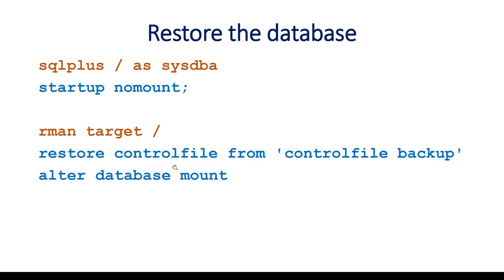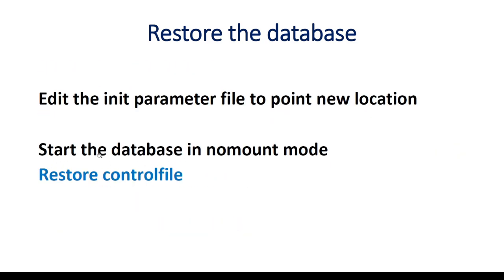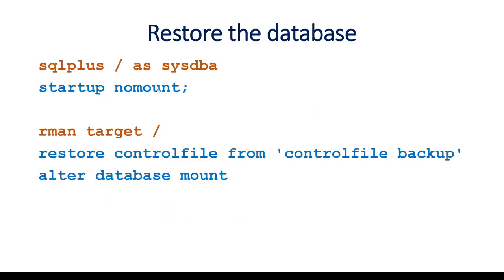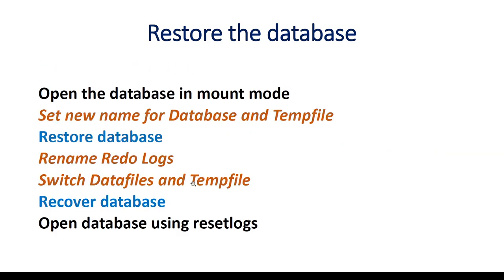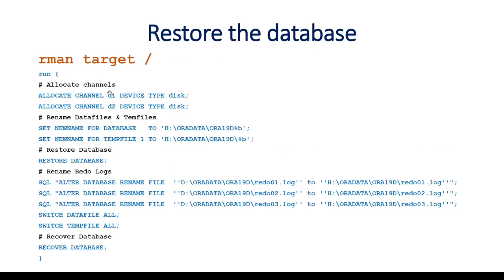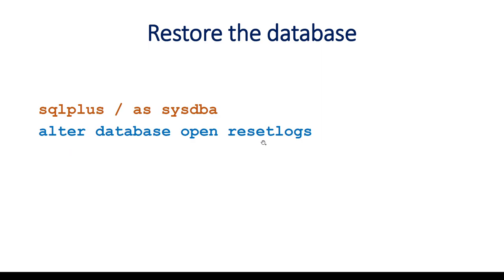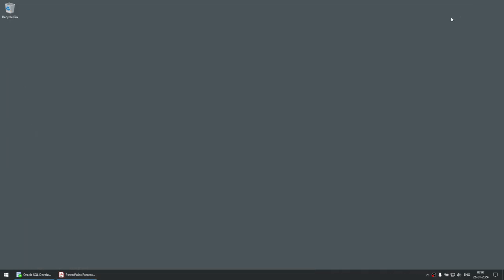Here are the commands: start the database in no mount mode, restore the control file, then open the database in mount mode. After the database is open in mount mode, run an RMAN run block where you allocate the channels, set the new name for your database, set the new name for your temp file, restore the database, rename the redo logs, switch data files, switch temp file, and recover the database. Once recovery is complete, open the database in reset logs mode. At this point your database would be restored successfully on the target server.